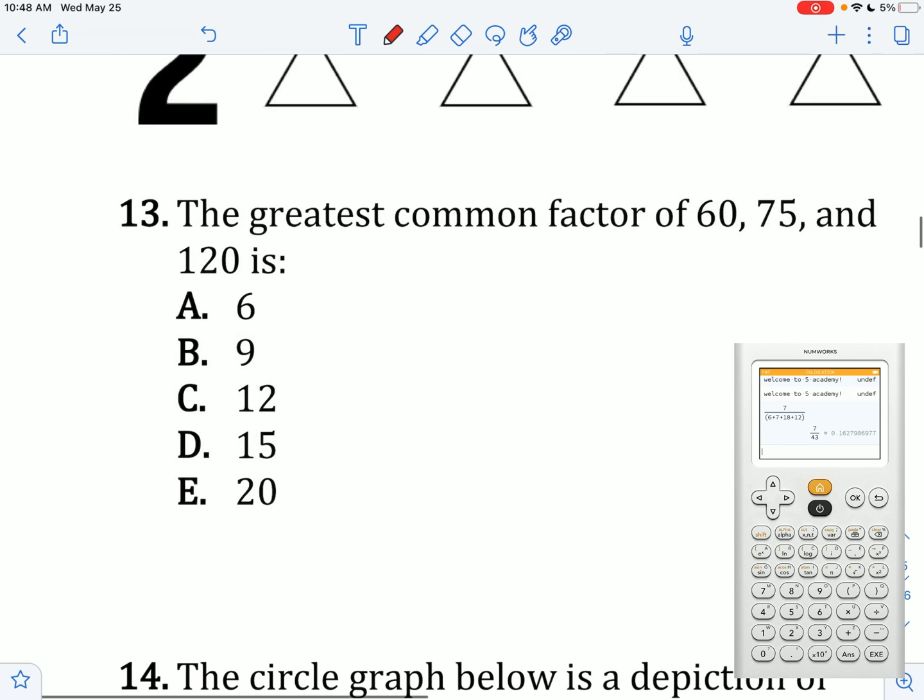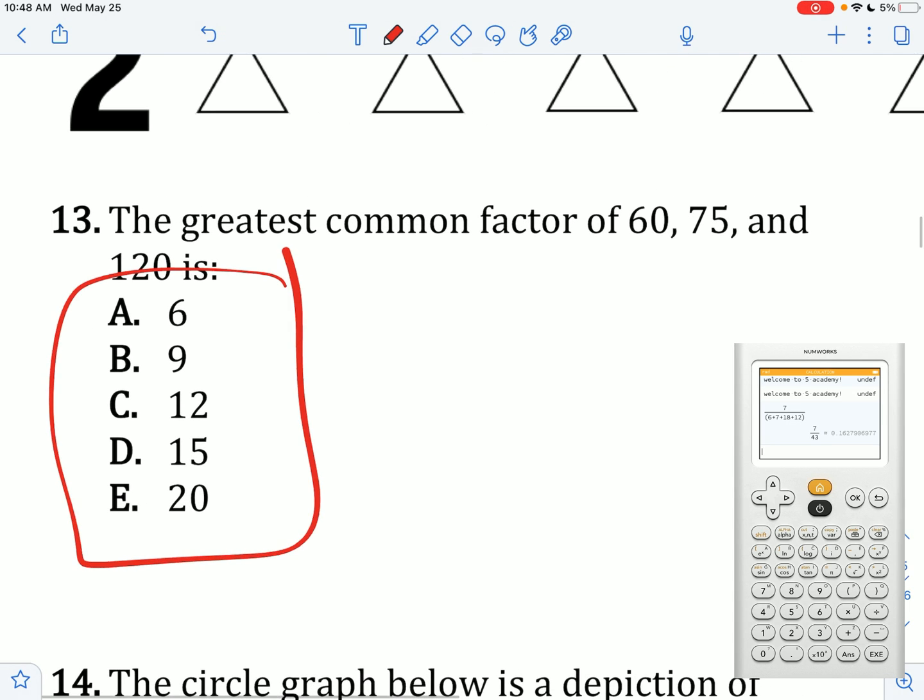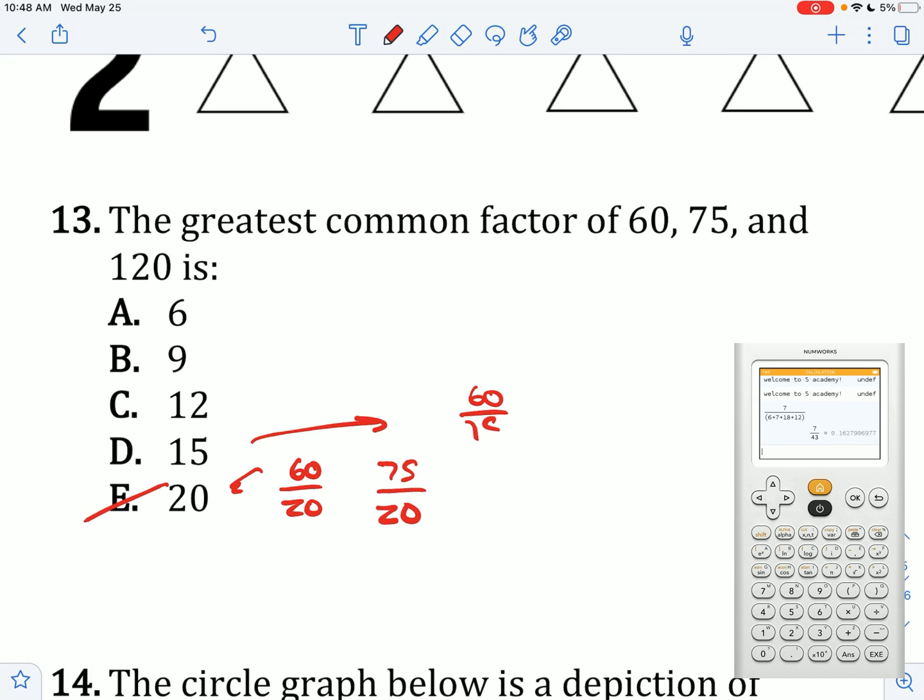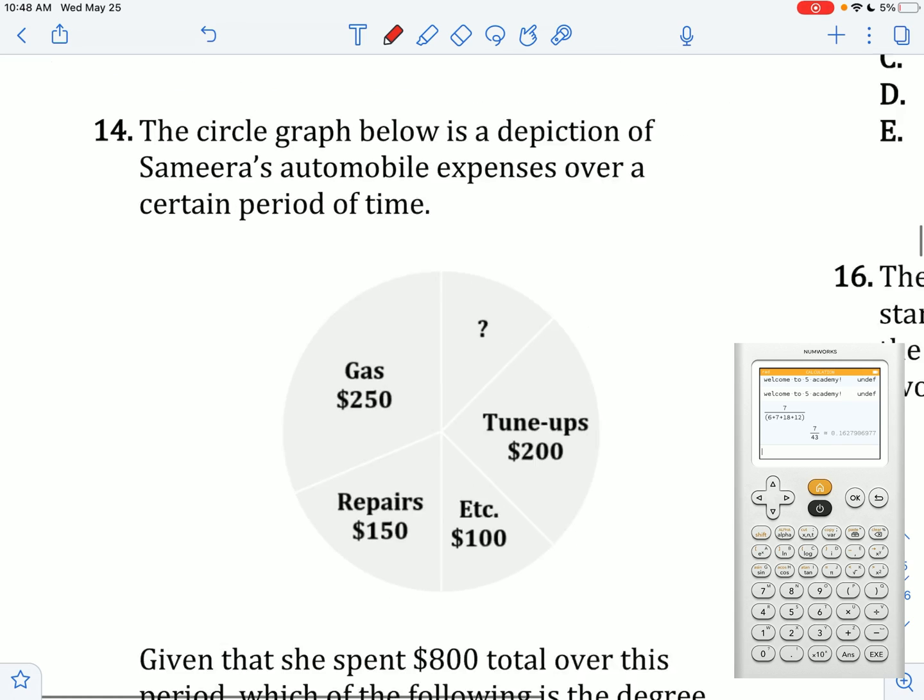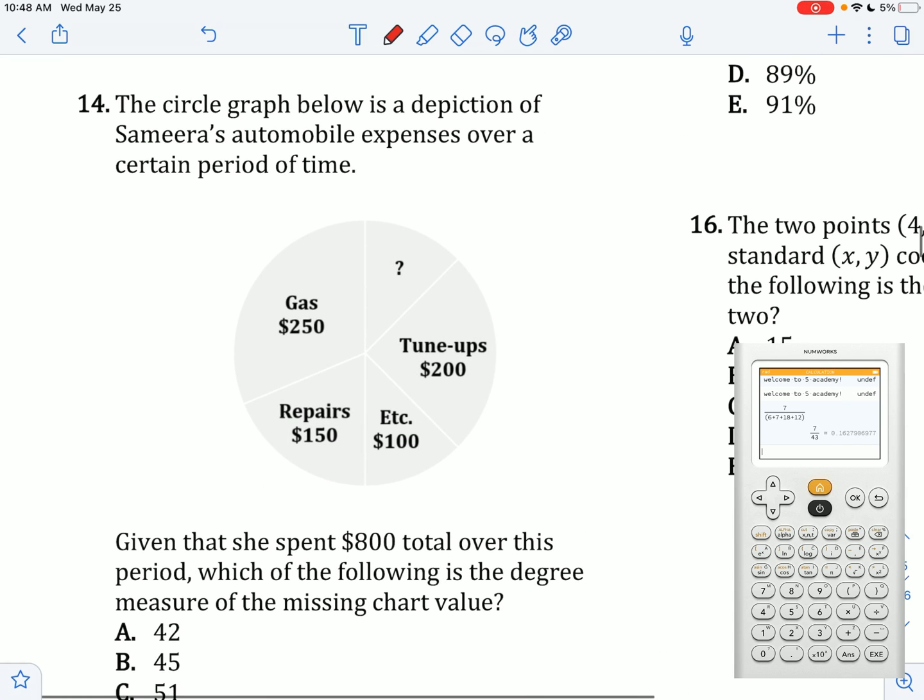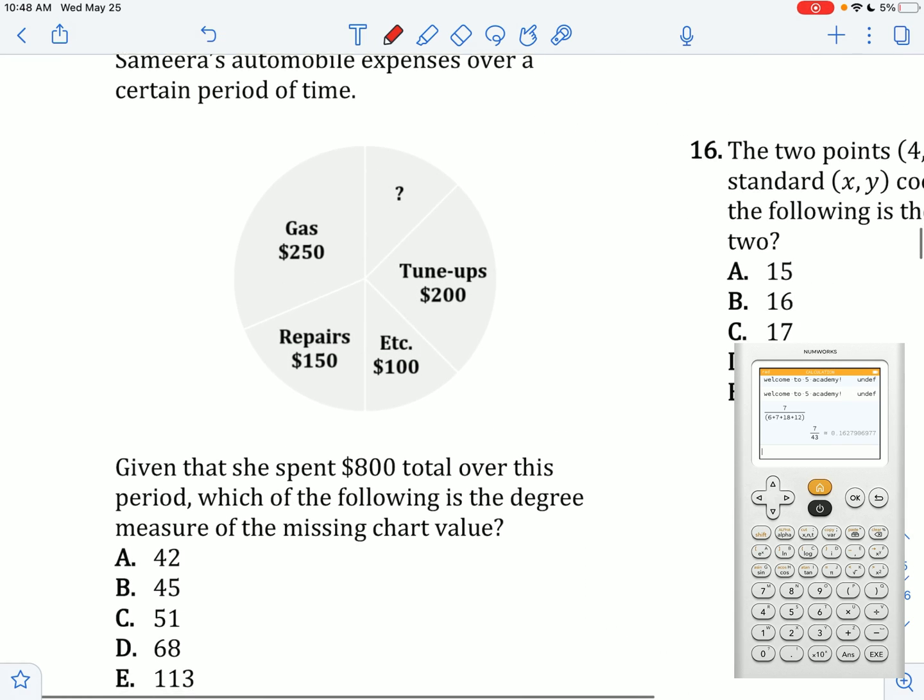The greatest common factor of these is what? Find the largest number here that you can divide all of these by to get a whole number. If I try 20, 60 over 20 works, but 75 over 20 is not a whole number. If I do 60 over 15, that works. 75 over 15, that works. 120 over 15, that works. The greatest number is 15.